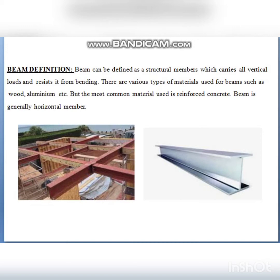Materials used for beams include wood, aluminium, steel, reinforced concrete, etc. The most commonly used material is reinforced concrete for casting beams. A beam is generally a horizontal or lateral member. Next, we will see the concept of the primary beam.